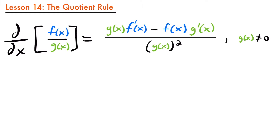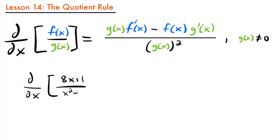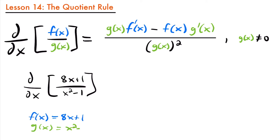Let's look at an example where we see this quotient rule in action. If I want to know the derivative, d/dx, of the function 8x plus 1 divided by x squared minus 1, first we want to identify what our numerator and denominator functions are. In this case our f of x is going to be 8x plus 1, and our g of x is going to be x squared minus 1.